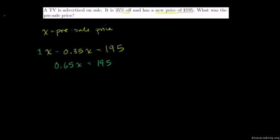Let's set up the equation. x - 0.35x = 195. 0.35x is the discount. So 1x - 0.35x = 0.65x. We have 0.65x equals 195.